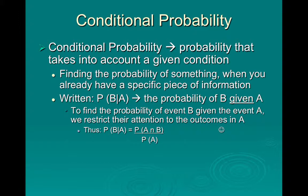So finding the probability of something when you already have a specific piece of information — for example, finding the probability that you randomly select a senior knowing they are taking AP Calc. So you know they take AP Calc, so you only select from AP Calc students. Event A would be what we know, so in this example, what we know is that they are in AP Calc.